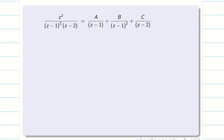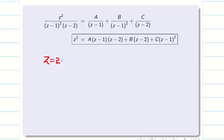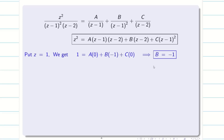Now my job is to find A, B, and C. We take values of Z that make at least one term zero. We have Z minus 1, so if I take Z equal to 1, the first and third terms become zero and I get B. Put Z equal to 1: 1 square equals A times 0 plus B times (1 minus 2) plus C times 0. Simplifying, we get B equal to minus 1.